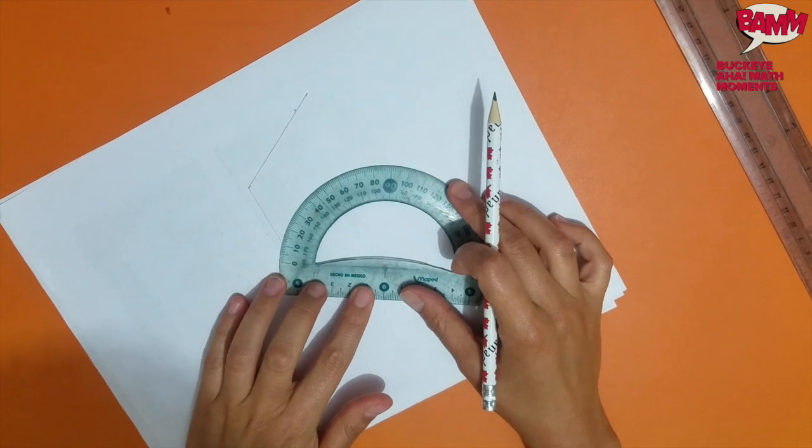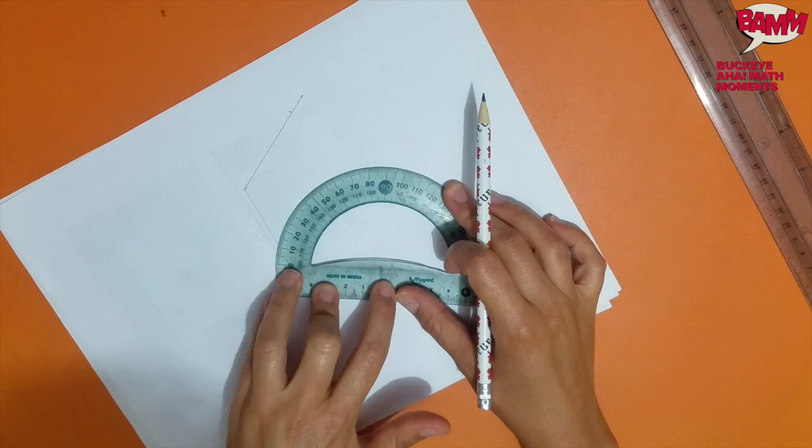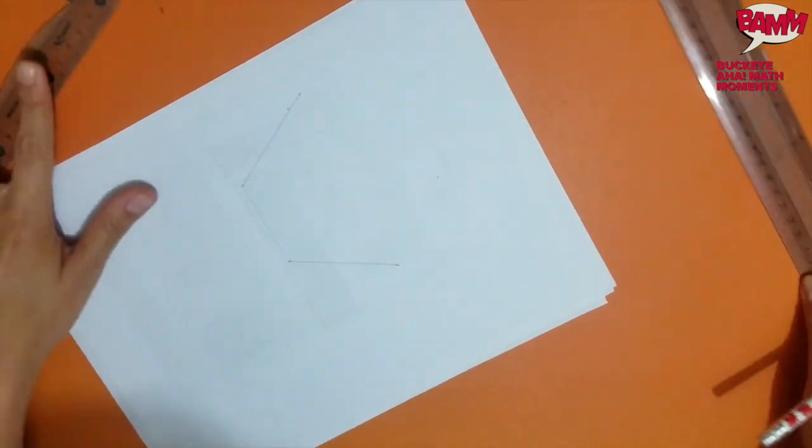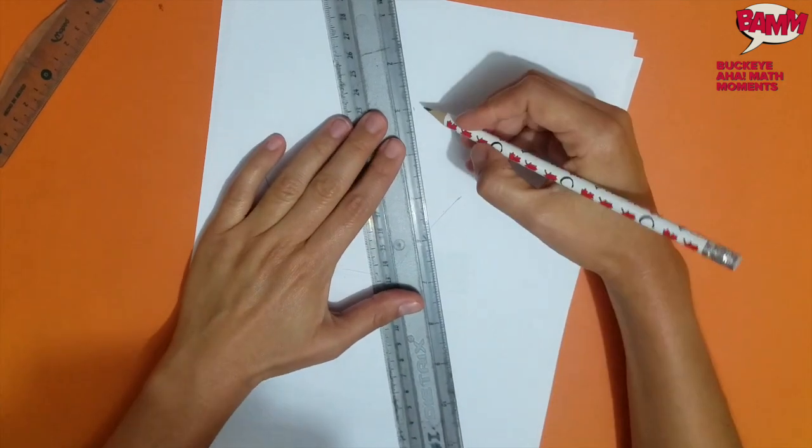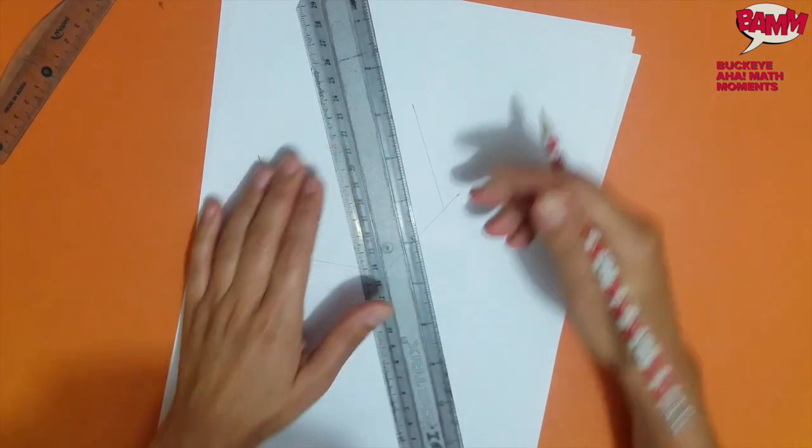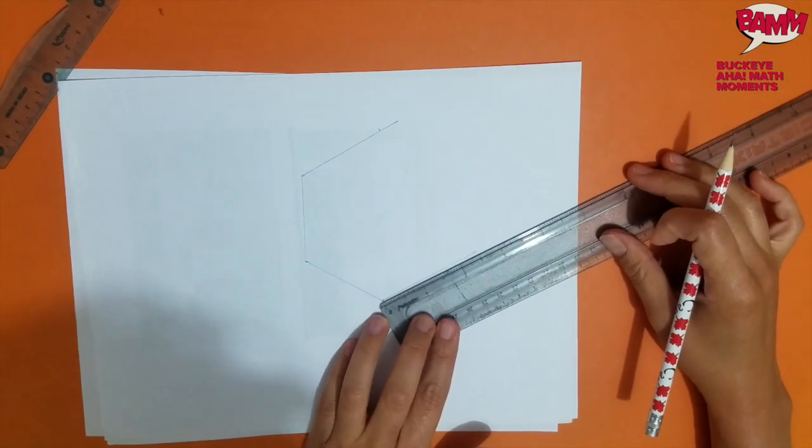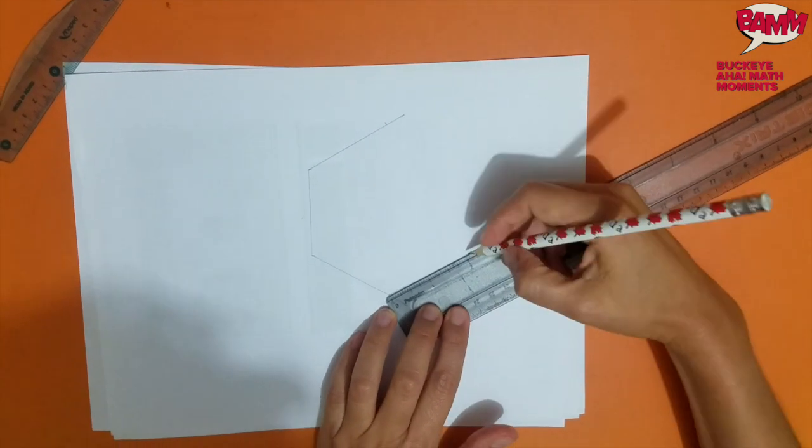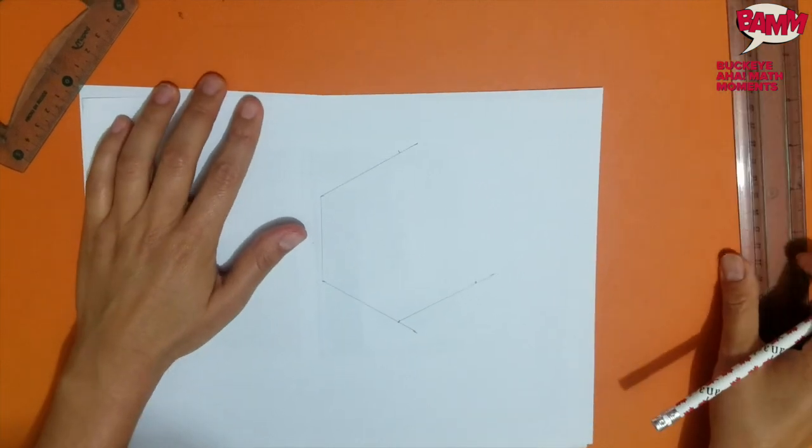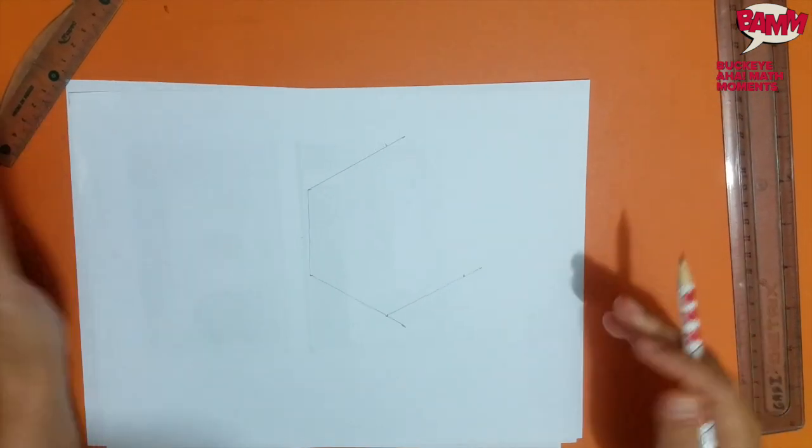And repeat the same process. Only this time I'm only going to make it on one side, because I already have a side on the other end of the segment. So again, 120 degrees. Join the end of the segment with my mark and measure 2 inches. Now I can go to this other end that I have in here, or this one. Whichever you want to do first.